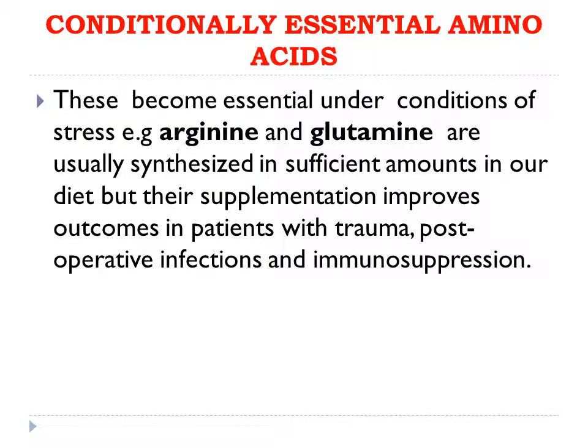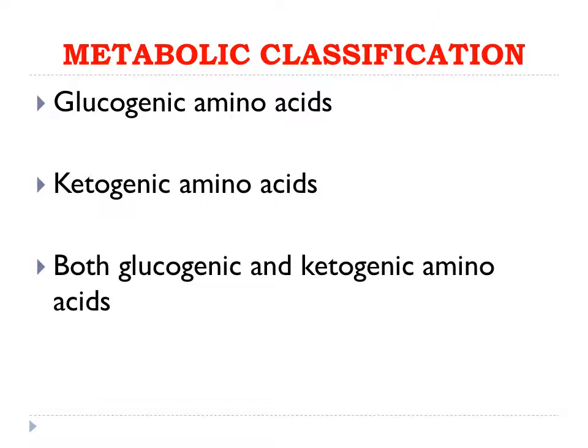The conditionally essential or semi-essential amino acids include arginine and glutamine. Normally they are produced in sufficient amounts in the body, but in conditions such as trauma, post-operative infections, or immunosuppression, these two amino acids tend to become deficient and their supplementation is required. Their supplementation in such conditions is known to improve clinical outcomes in these patients.